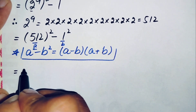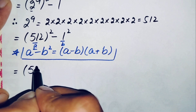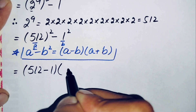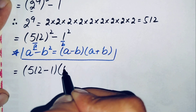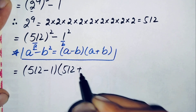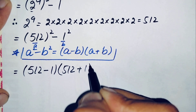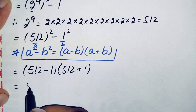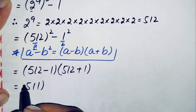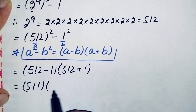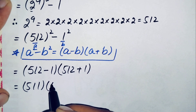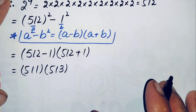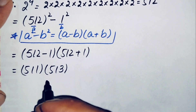Here a is 512 and b is 1, so using this identity the equation becomes 512 minus 1 times 512 plus 1. The subtraction gives 511 and the addition gives 513, so we have 511 times 513.